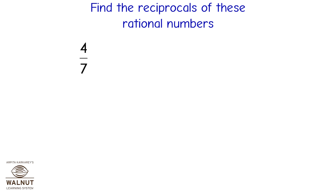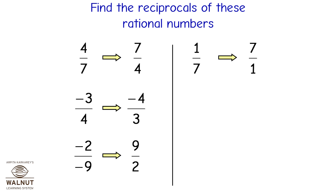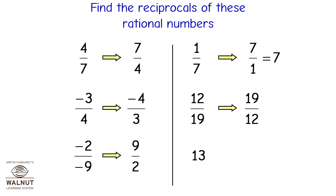Find the reciprocals of these rational numbers: 4/7 becomes 7/4. -3/4 becomes -4/3. (-2)/(-9) becomes 9/2. 1/7 becomes 7/1 = 7. 12/19 becomes 19/12. 13 becomes 1/13.